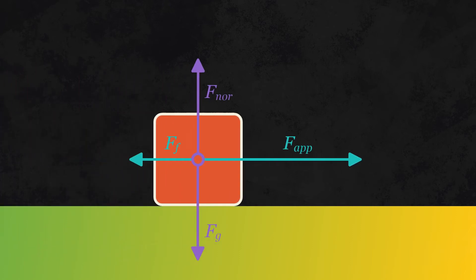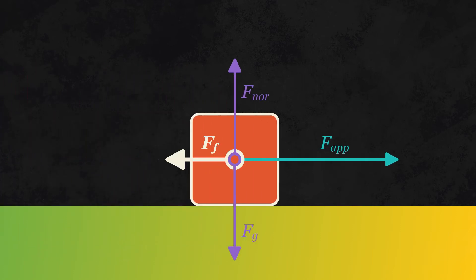Finally, if an object is being pushed along a surface, there's always a friction force that goes the opposite direction as the applied force. We'll learn how to calculate that friction force later in the video.